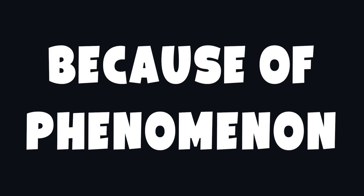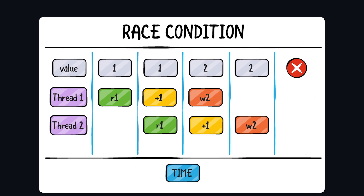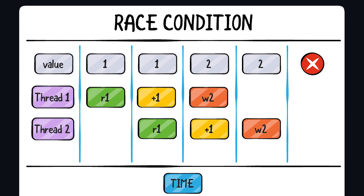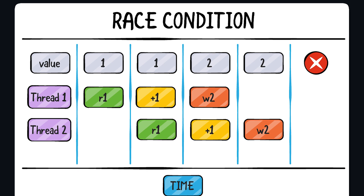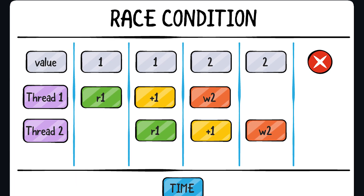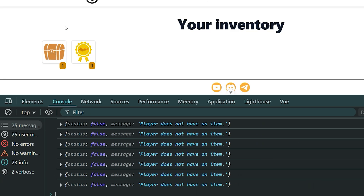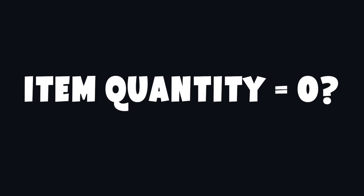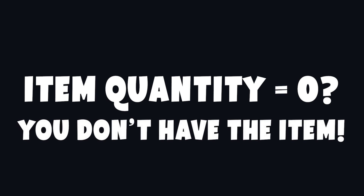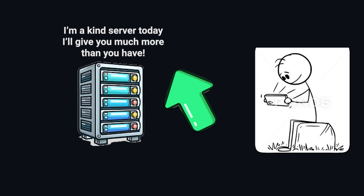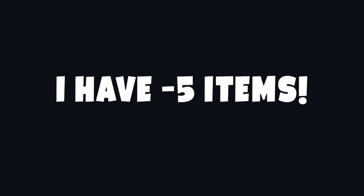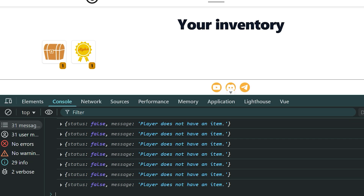Why? Because of a phenomenon in programming called race condition. In simple words, when you send too many requests at the same time, the server assumes you still have the item before all requests are processed. This leads to unexpected results. And in my case, it was even worse. My condition for checking a player's item was: if item quantity is 0, then the player doesn't have an item. But thanks to race condition, a player could end up with –1, –2, and even –600 items. Basically, if you had a negative number of items in your inventory, you could use it again and again.